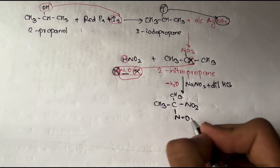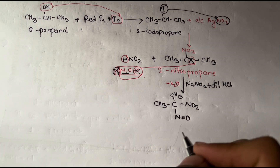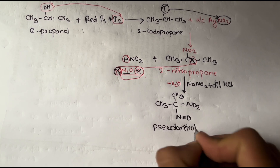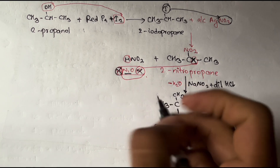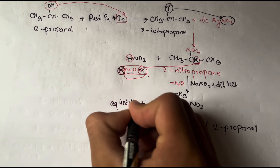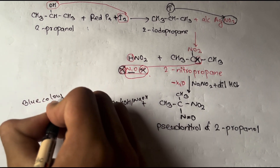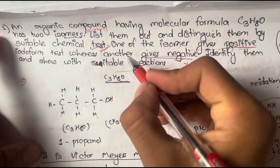The product from 2-propanol through the Victor Meyer method has a double bond with nitrogen and oxygen in balance, forming a pseudonitrol compound. This pseudonitrol of 2-propanol, on treatment with KOH or NaOH, gives blue coloration — distinguishing 2-propanol from 1-propanol.